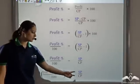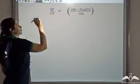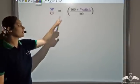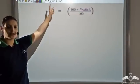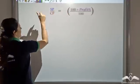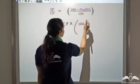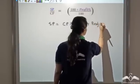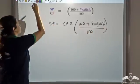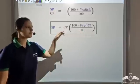So the ratio of selling price to cost price is (100 plus profit percent) divided by 100. I wanted to find the selling price, I knew the cost price, and I knew the profit percentage. So I can simply cross-multiply cost price to the other side, and I get selling price equals cost price times (100 plus profit percent) divided by 100. This is my selling price formula.